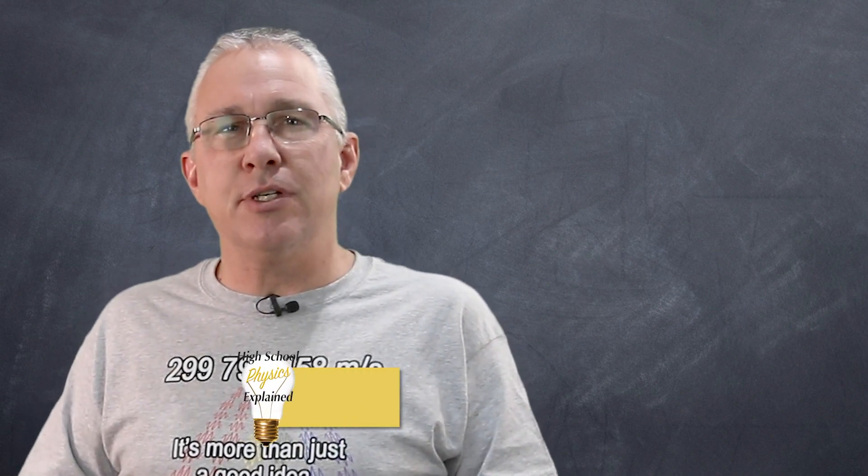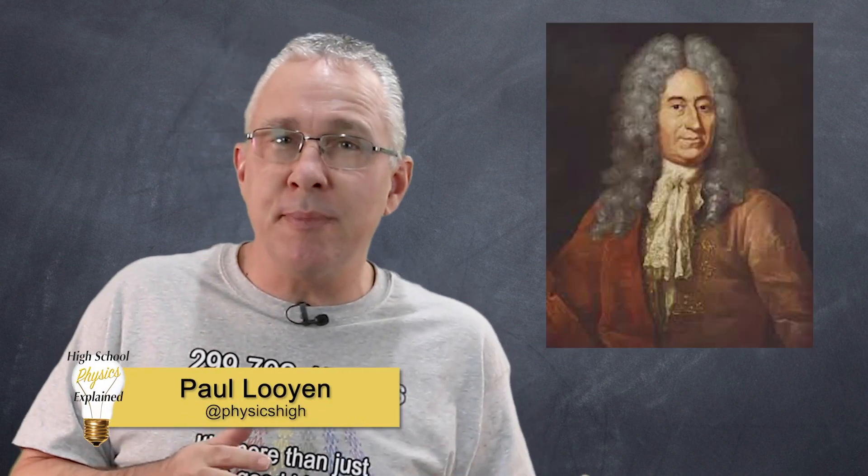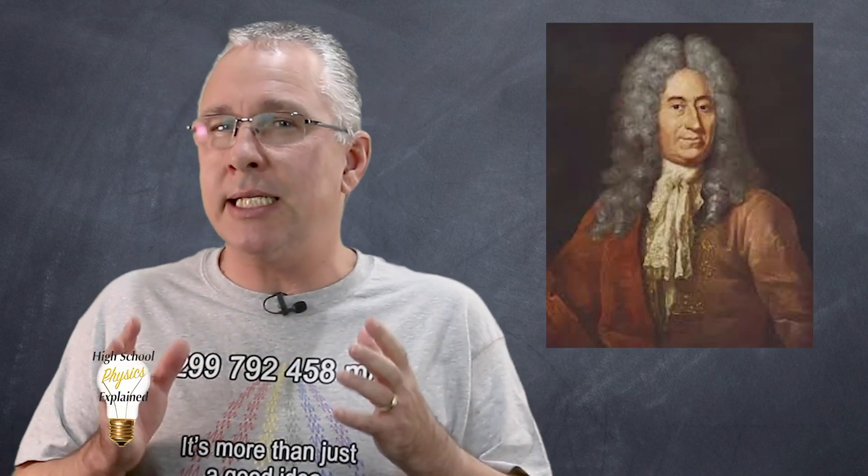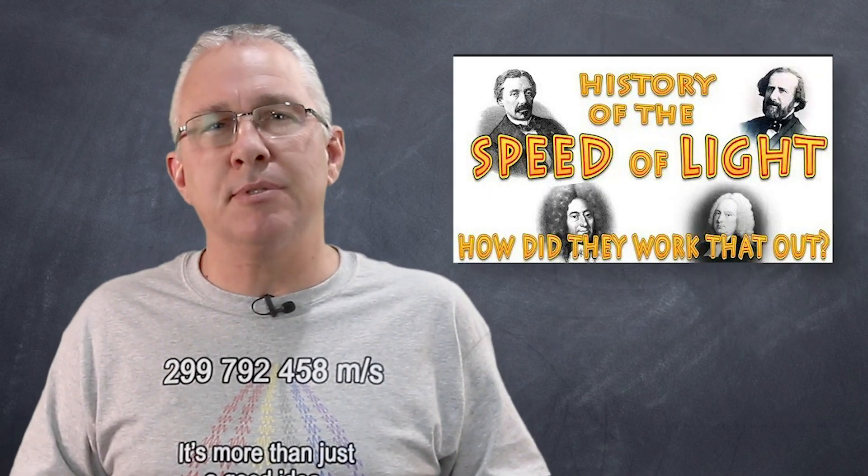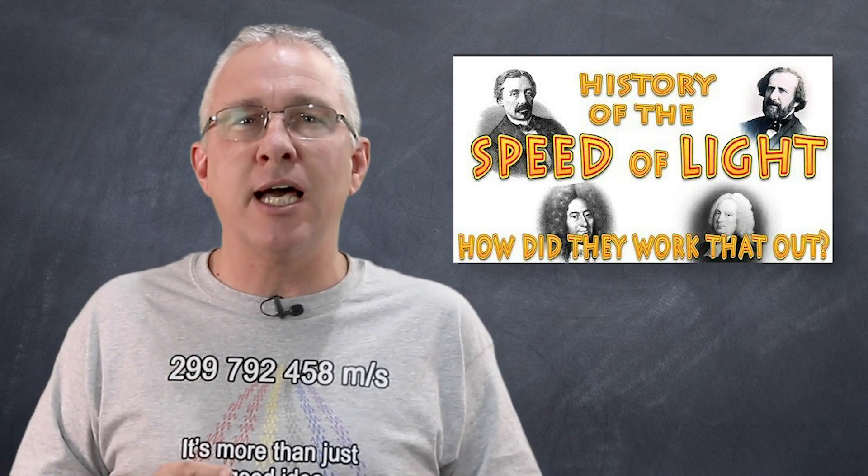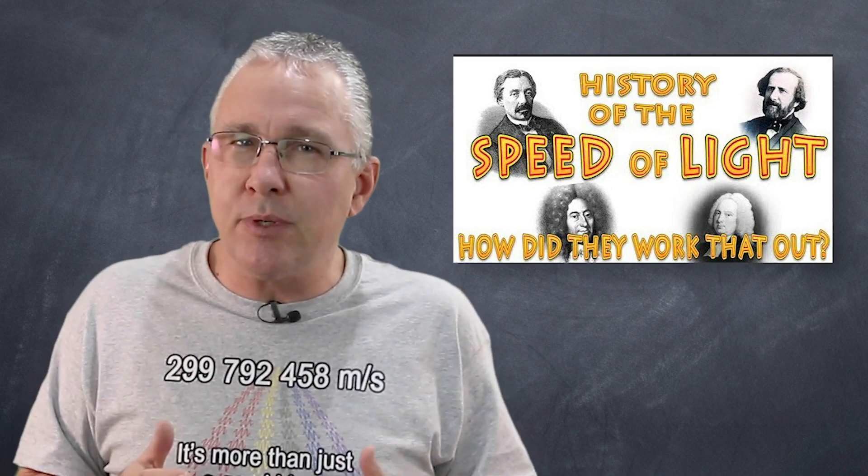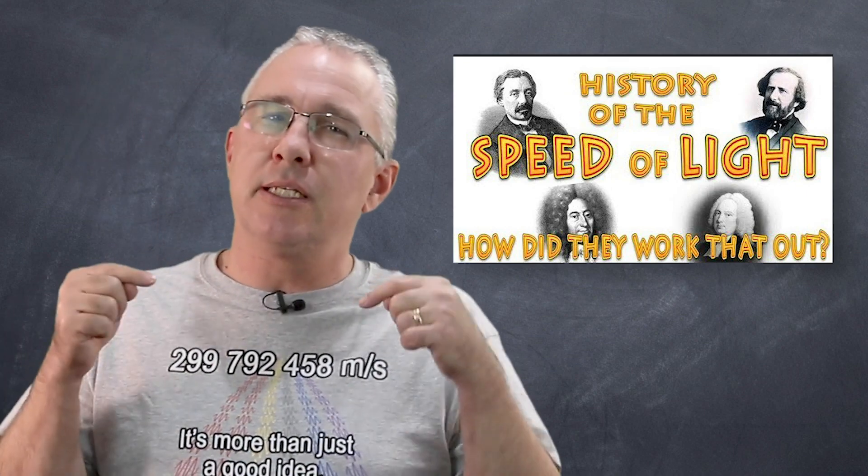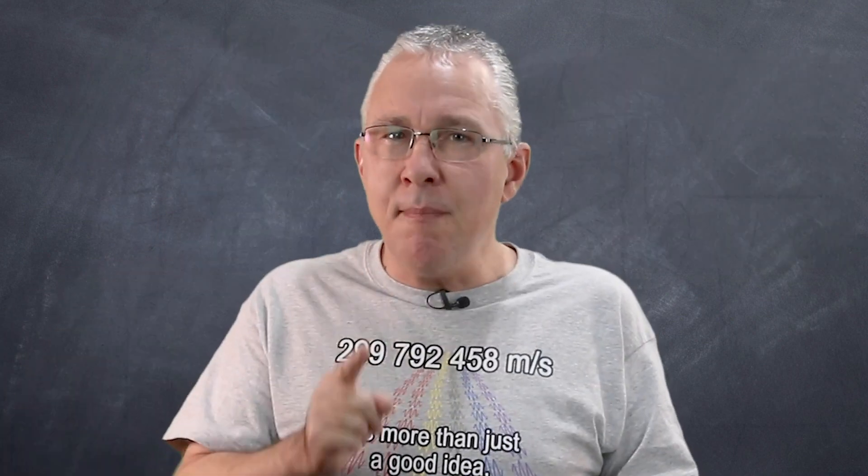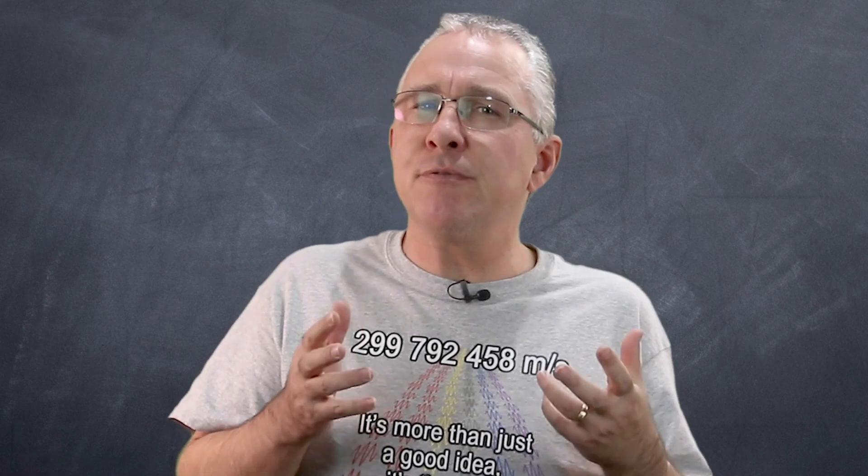Now, over the last few centuries, a number of scientists, starting with Römer in the 17th century, tried to work out exactly how fast light travels. Now, I cover a number of those attempts in a previous video and I encourage you to have a look at those as they lay the groundwork for what I'm discussing now. And you'll find the link here and also in the description below. And a number of those attempts were done by what we refer to as the time of flight method.